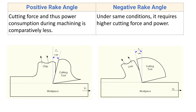Next difference: cutting force and thus power consumption during machining is comparatively less for positive rake angle. This positive rake angle makes the tool tip sharp, and due to this, very less force is required to remove the material from the surface of the workpiece. That is why there is less cutting force and less power consumption with positive rake angle.